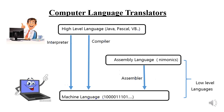Today, we are going to learn about computer language translator software. Translator software called assembler was used to translate programming written in assembly language into machine language. And two translator software were used to translate programming written in high level languages into machine language. One of them is interpreter and the other is compiler.